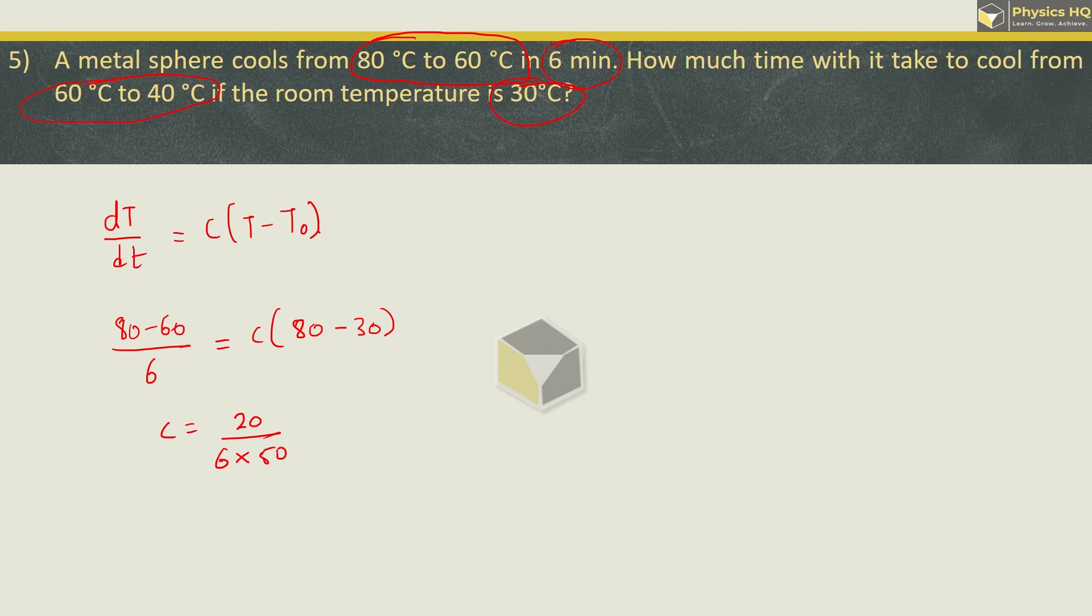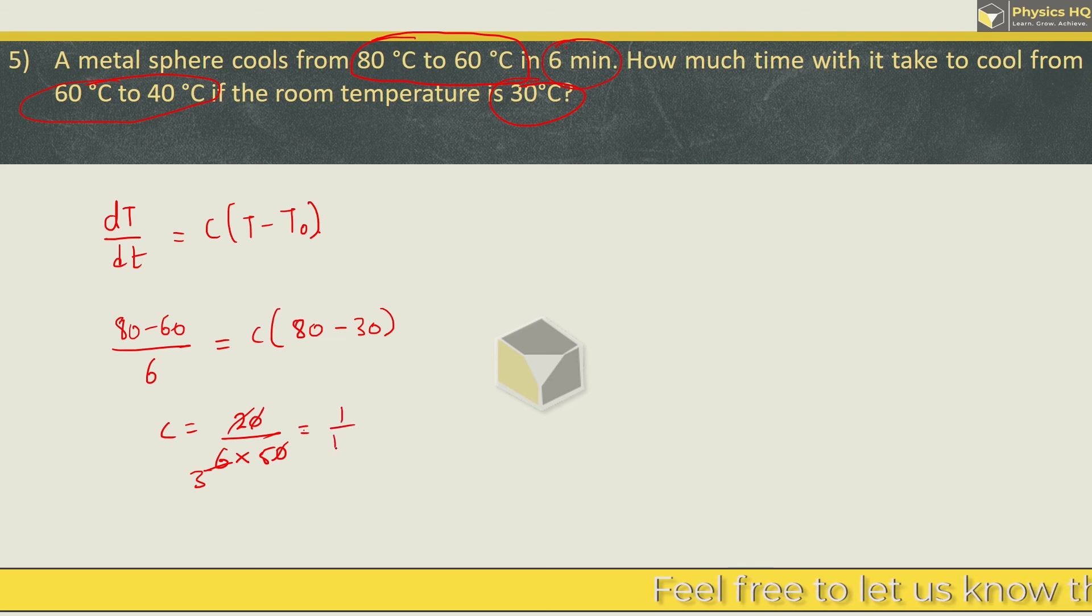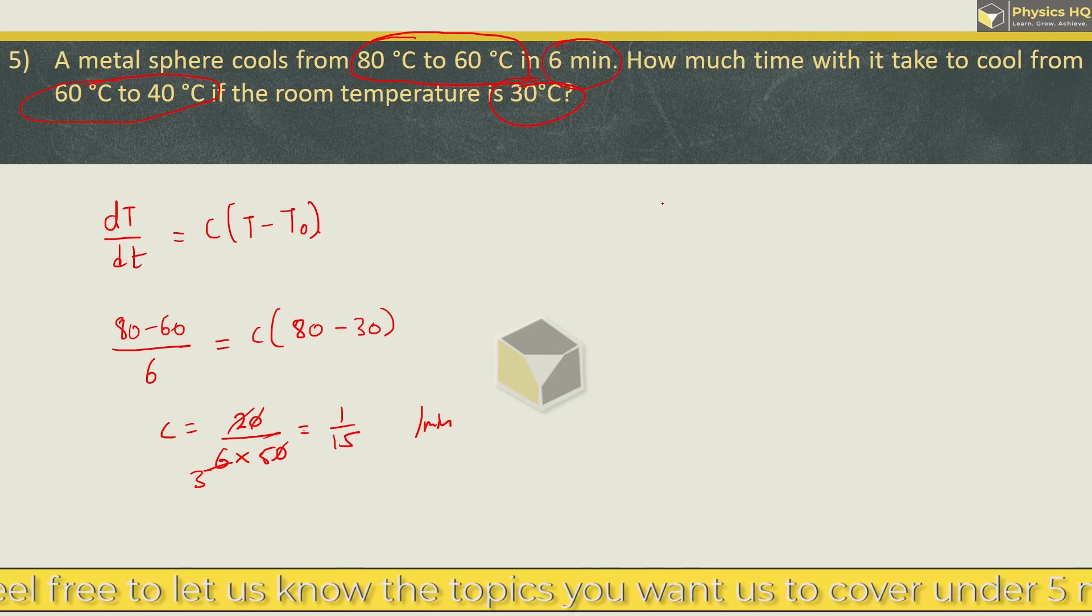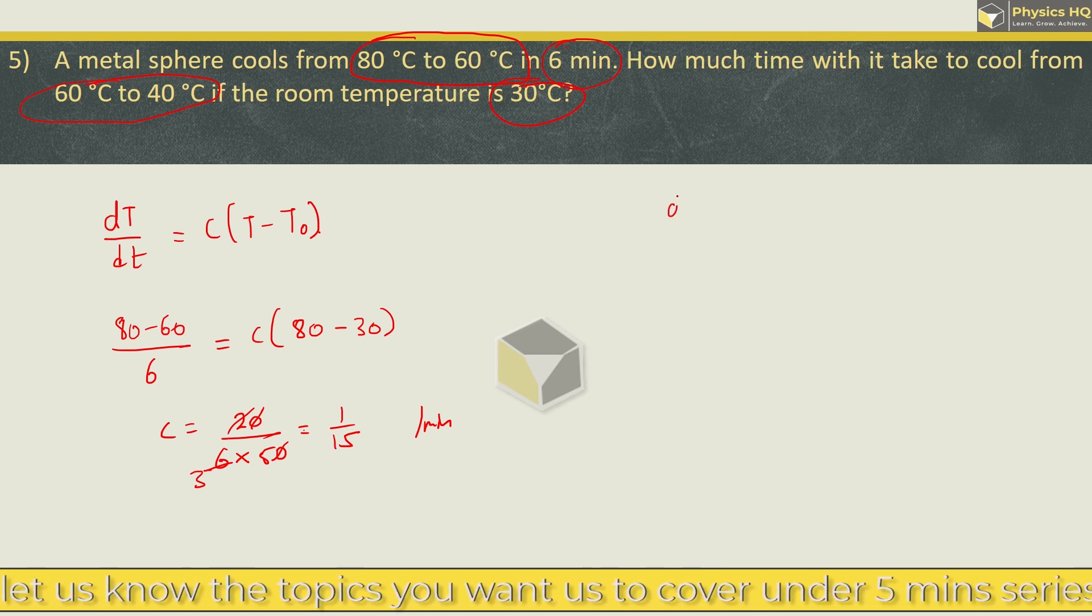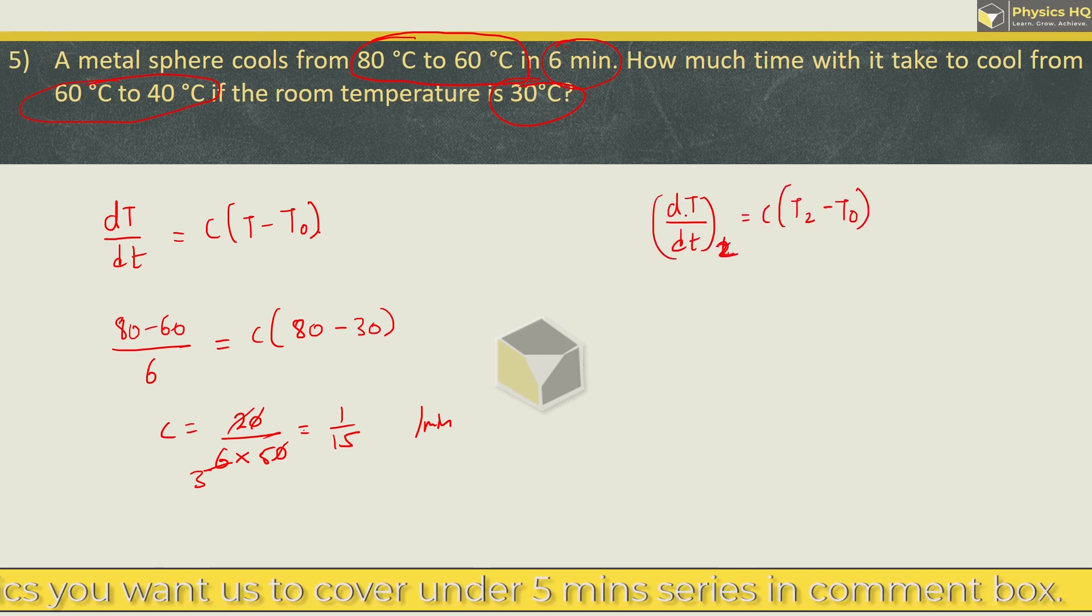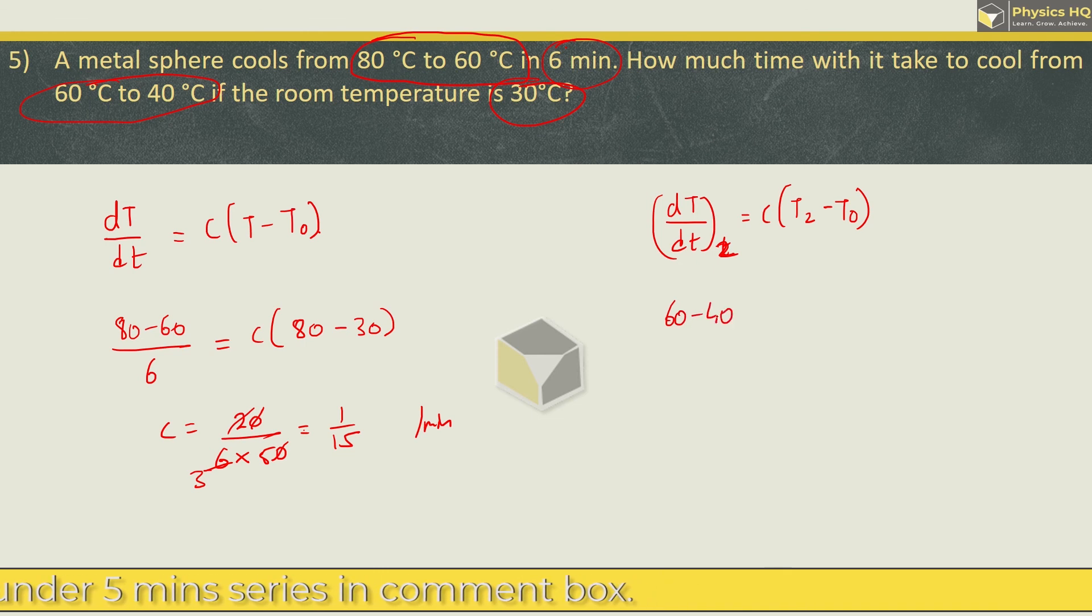So we have 80 minus 60 is 20 divided by 6 and 80 minus 30 becomes 50. Zero cancels, 2 threes are 6, so we got c as 1 by 15 and unit is per minute. Now in the second case we are supposed to find out how much time it takes to cool. For the second case equation: change in temperature we know is 60 to 40, so that is 60 minus 40. The time required dt we need to find.